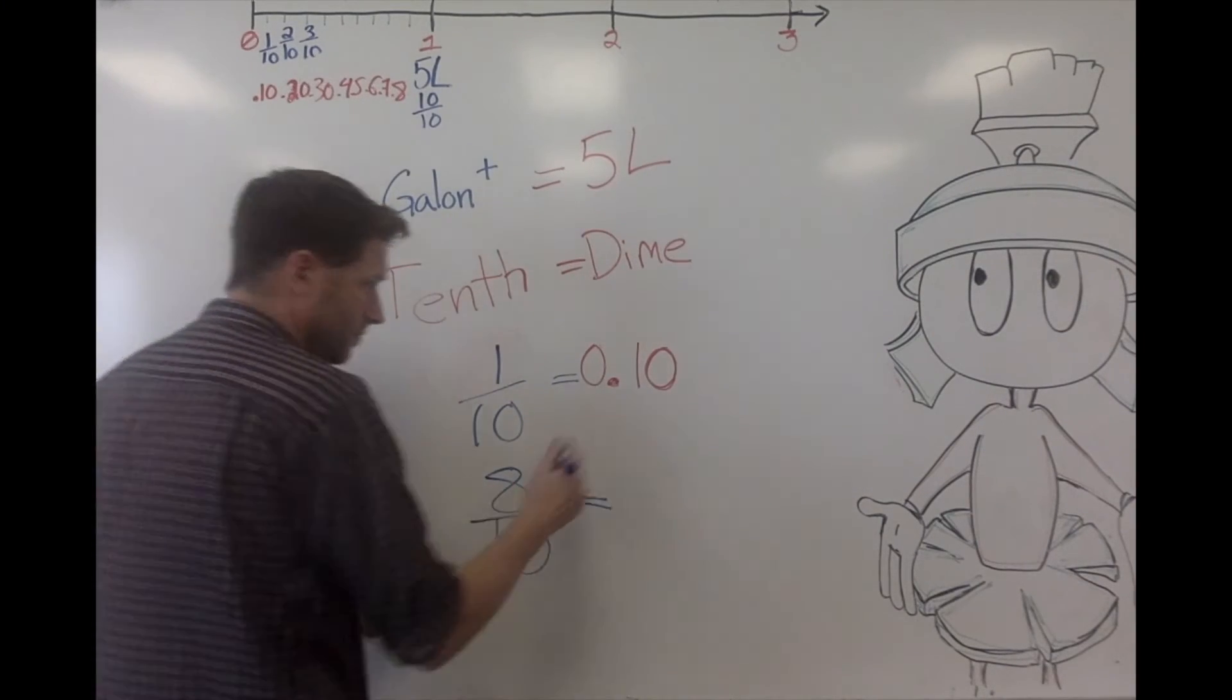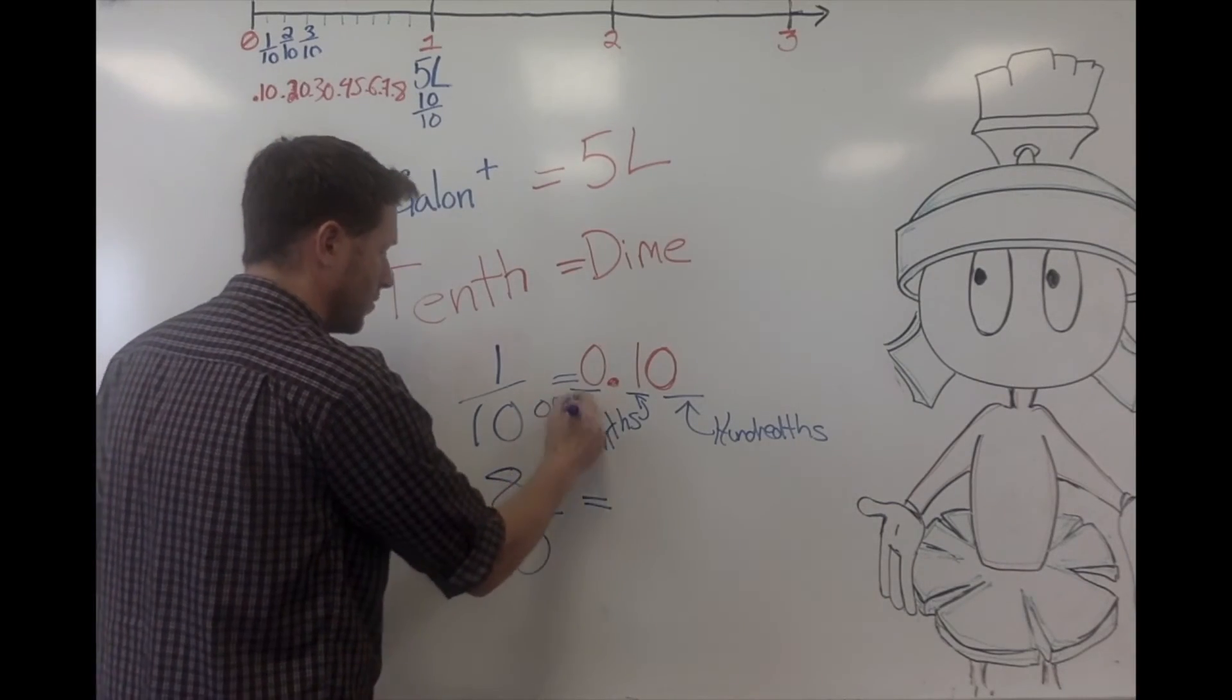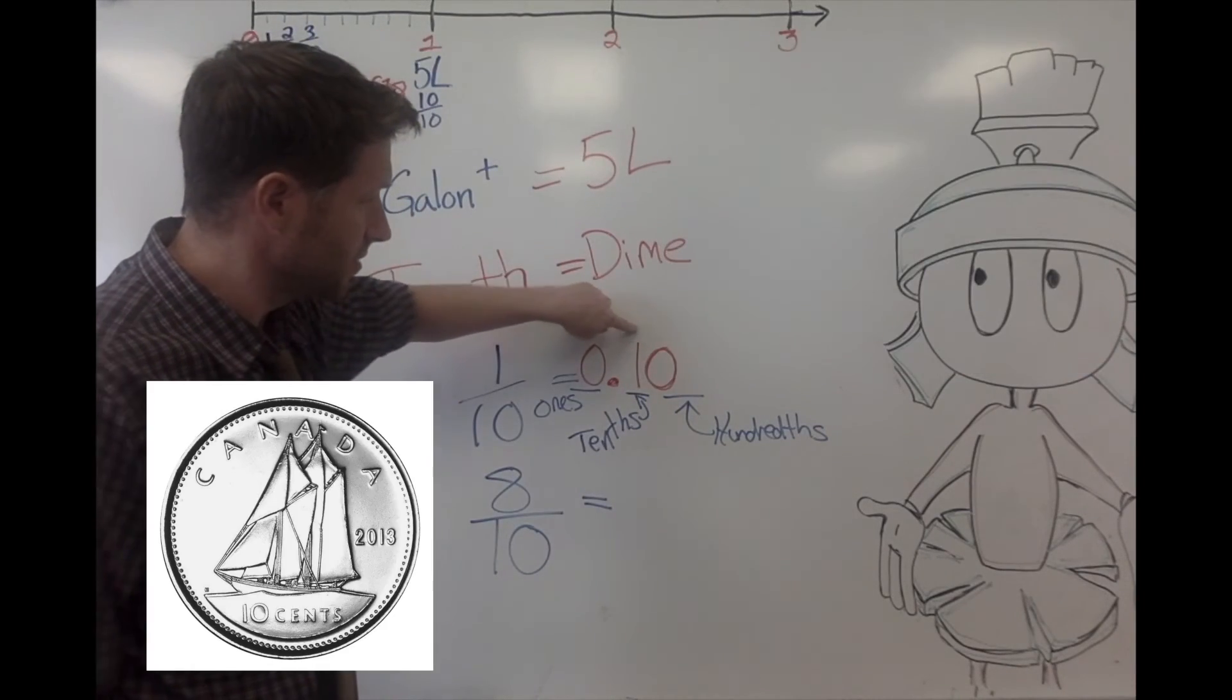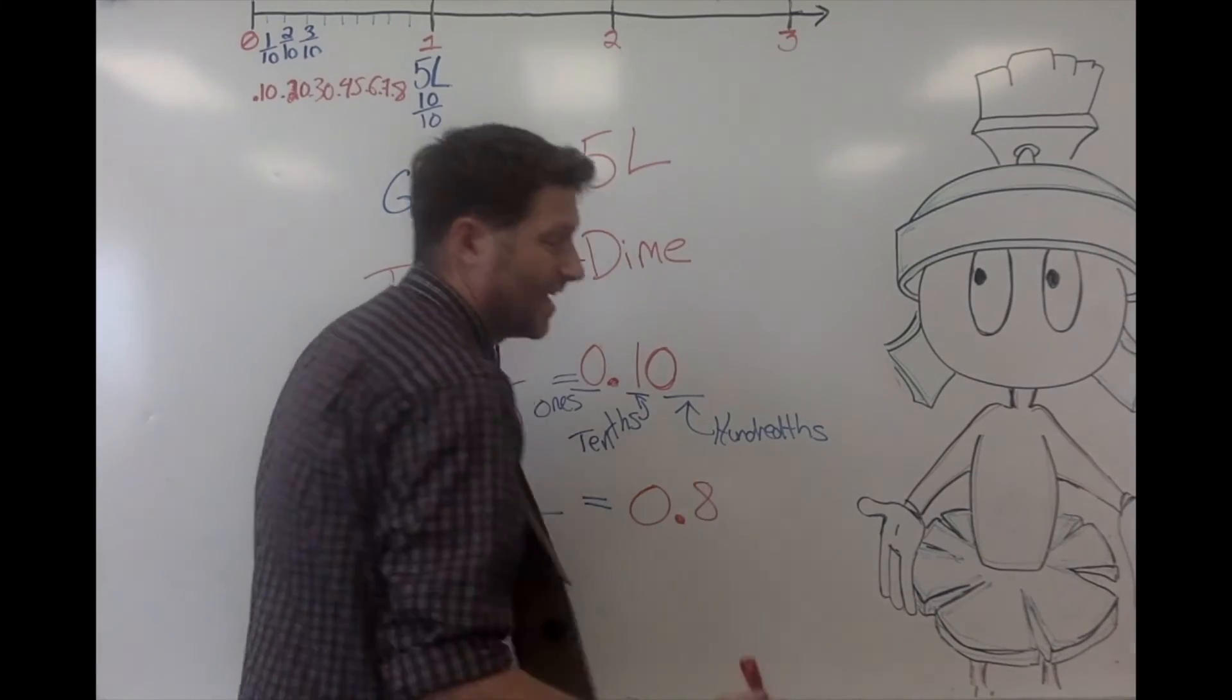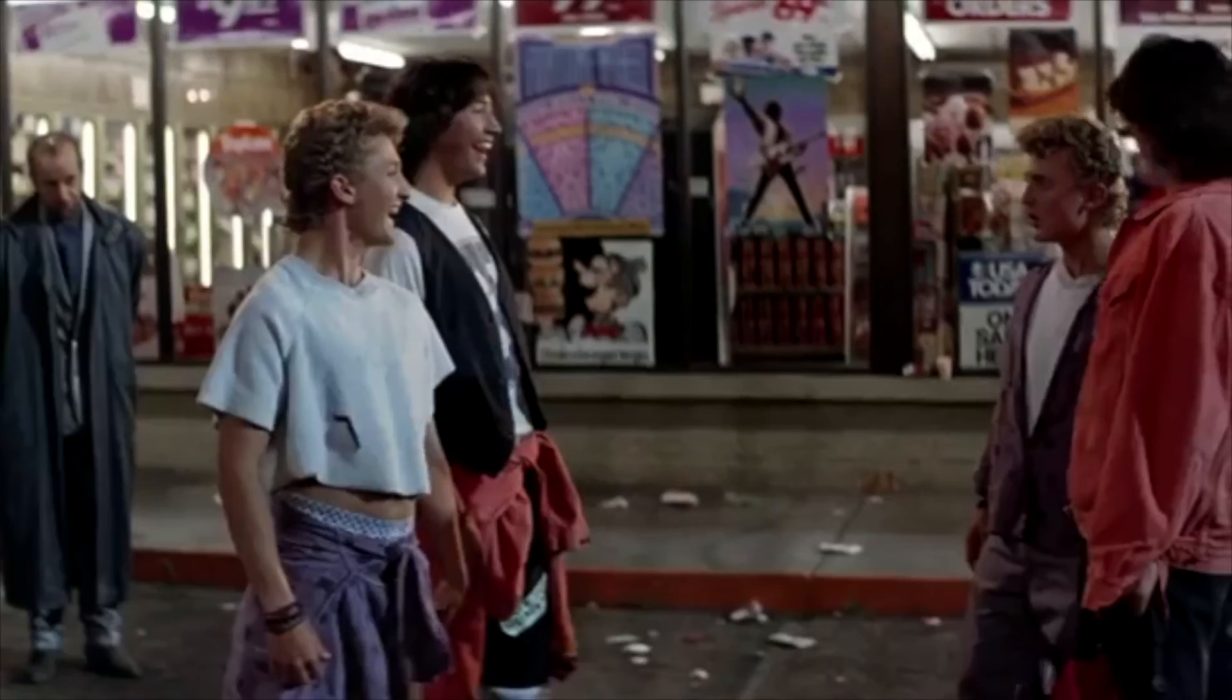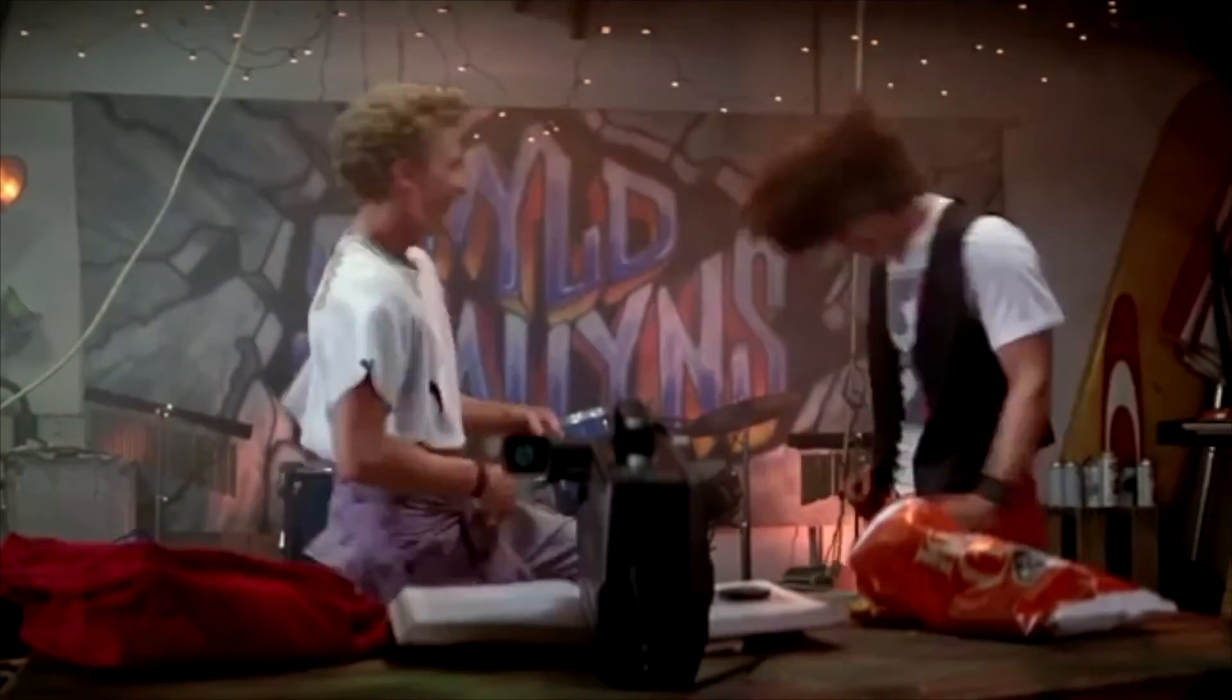So our number line: here are the tenths, we'll get to the hundreds later. The tenths, these ones are your ones, and if you're using money, this is a dollar, this is ten cents, this is a penny. So in tenths, in decimal form, Samuel Peterson got 0 decimal 8 parts of a full five-liter gallon plus challenge. 0.8 is how we turn eight tenths into a decimal. Think on that.